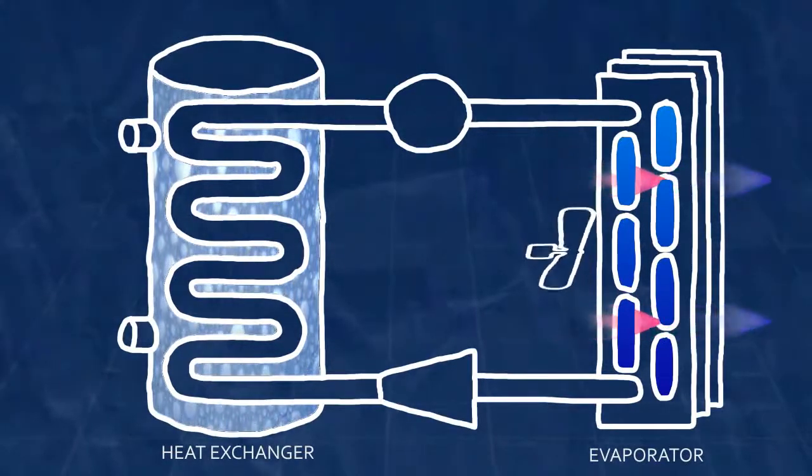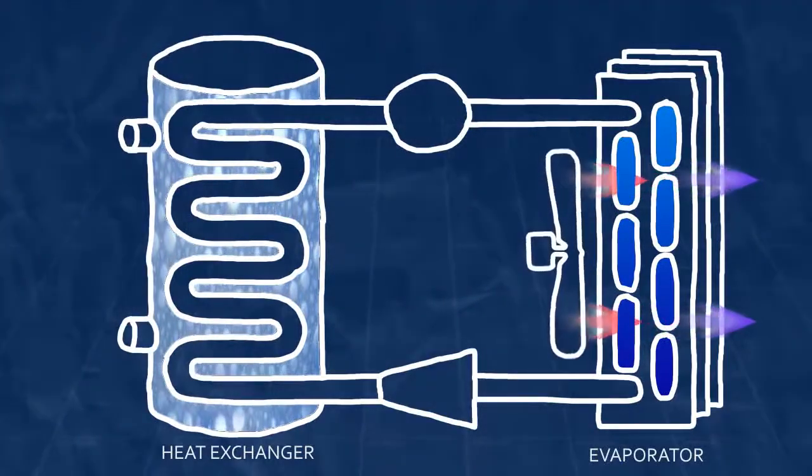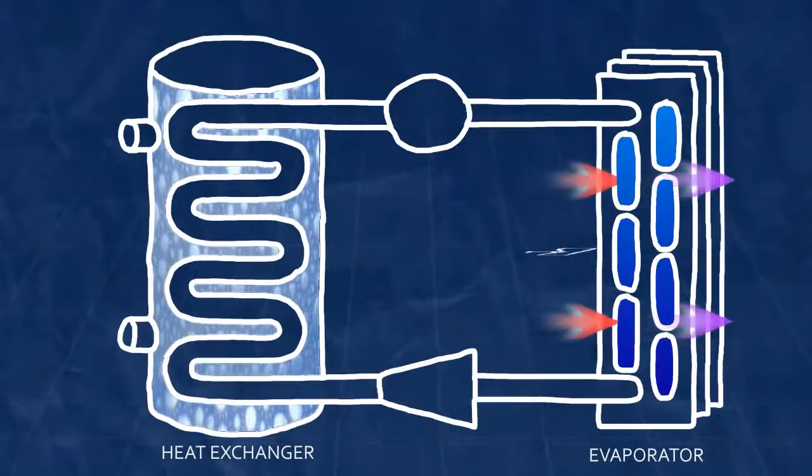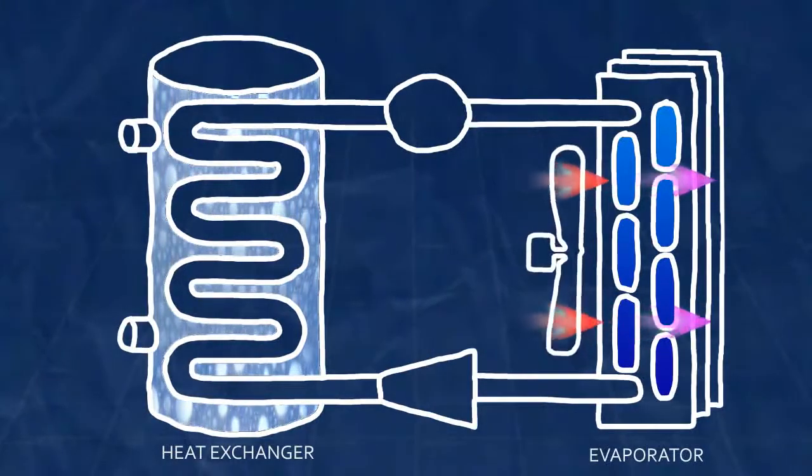The heat added to the refrigerant causes its temperature to rise and the fluid to become a warm, low pressure vapor. As the refrigerant changes from a liquid to gas, large amounts of energy transfer take place.